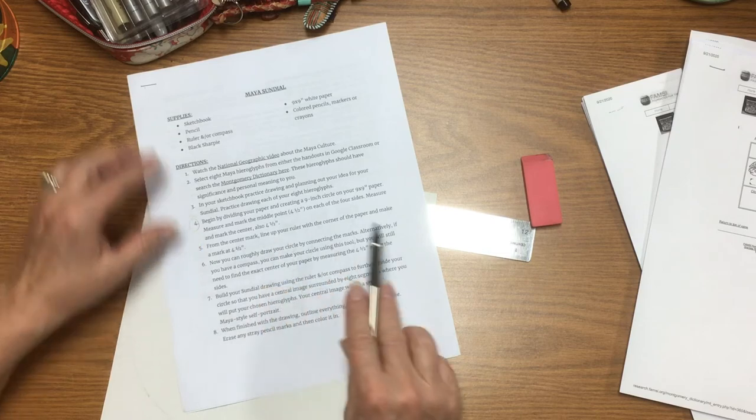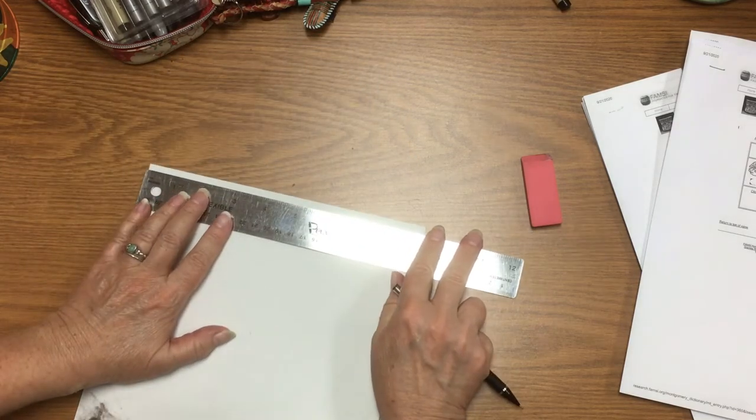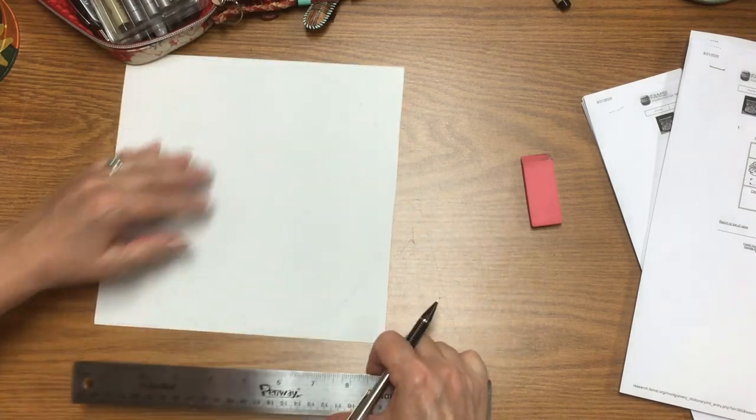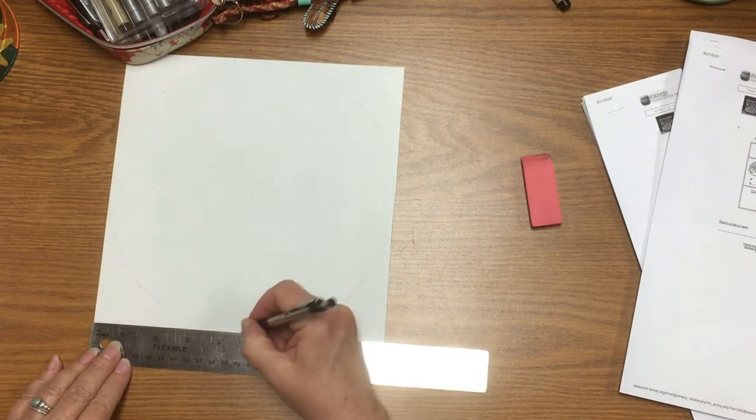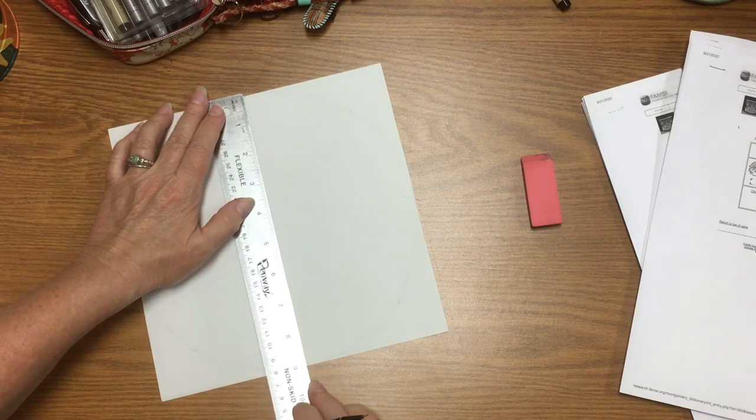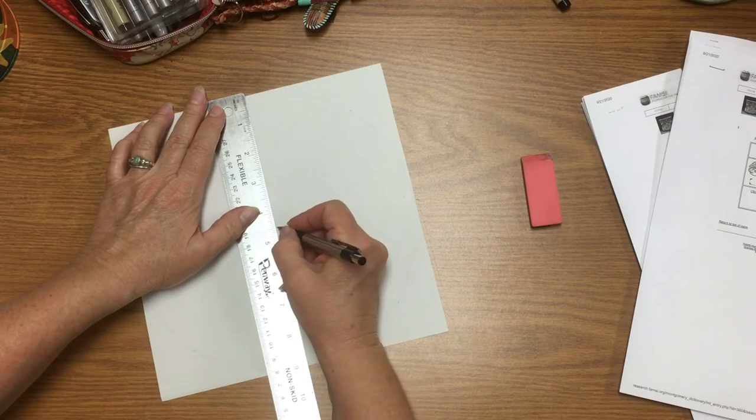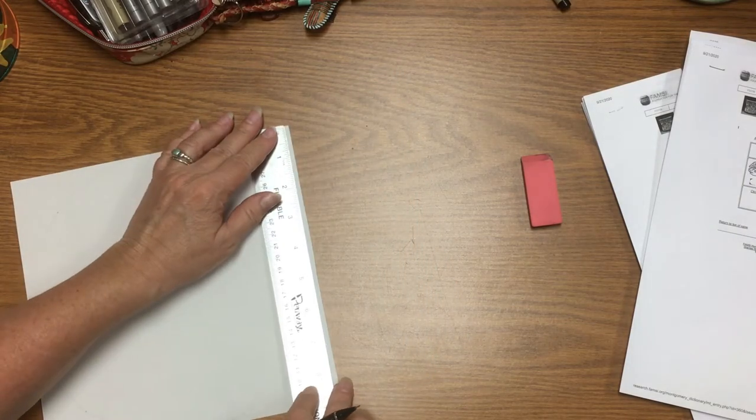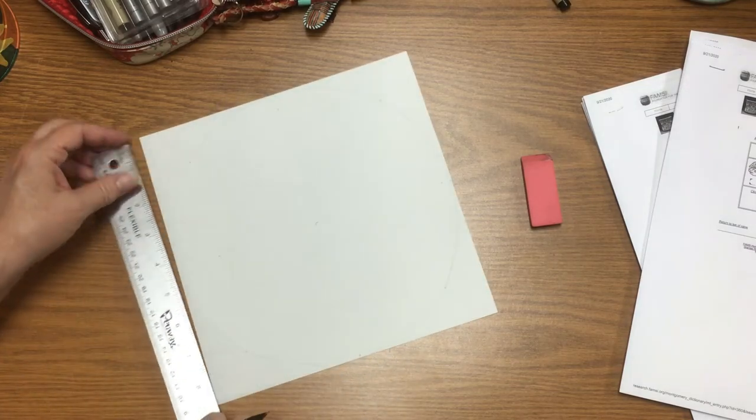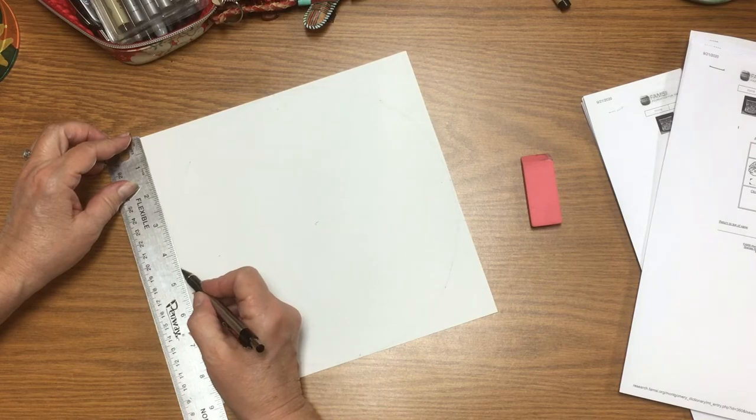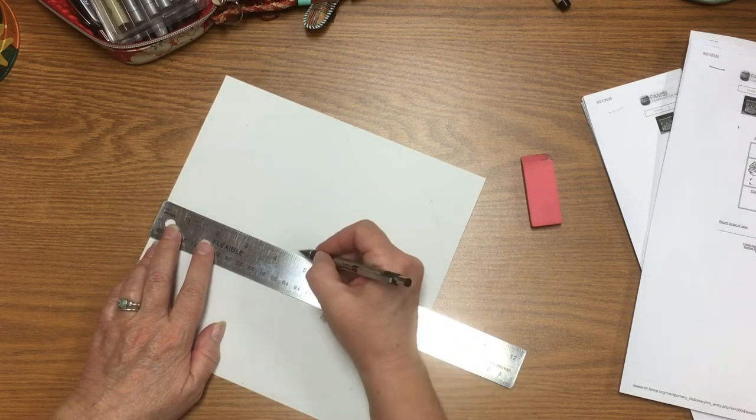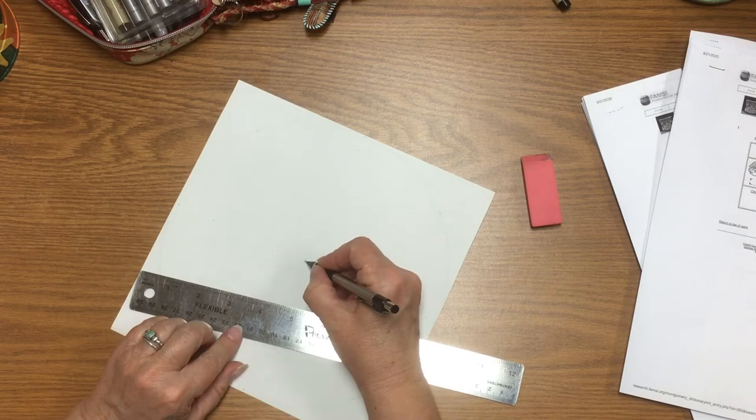And the reason why we do that is so that we can find the exact center. There's four and a half inches there. There's four and a half inches there. When I do that, then I can connect those marks and find my four and a half inches and mark four and a half inches here. Then I'm going to measure the other two sides and find my four and a half inches. Mark it there and mark it there. Again, I'm going to connect those two marks and find my four and a half inches there. And it's right where those two marks intersect that is my center.